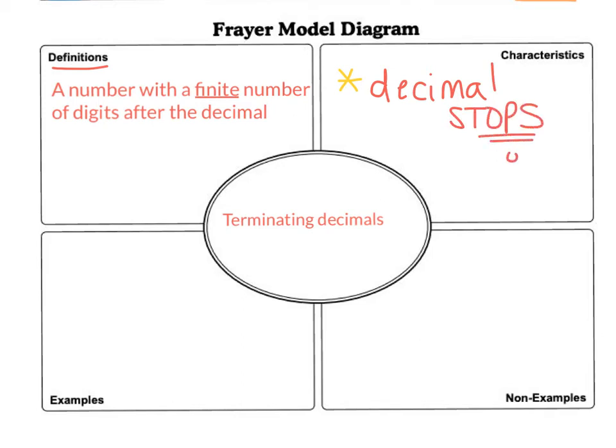Stops, or it ends. You can count the number of digits after the decimal. It ends. There's no ellipse. There's no bar notation. So terminating means it stops or ends.